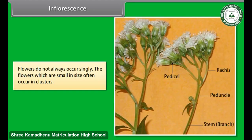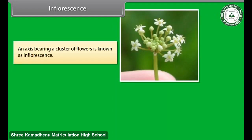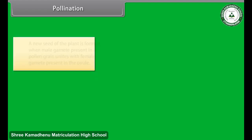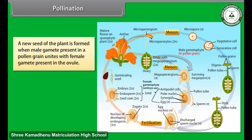Flowers do not always occur singly. Flowers which are small in size often occur in clusters. An axis bearing a cluster of flowers is known as an inflorescence. It may be terminal or axillary. Cauliflower is a very good example of inflorescence.